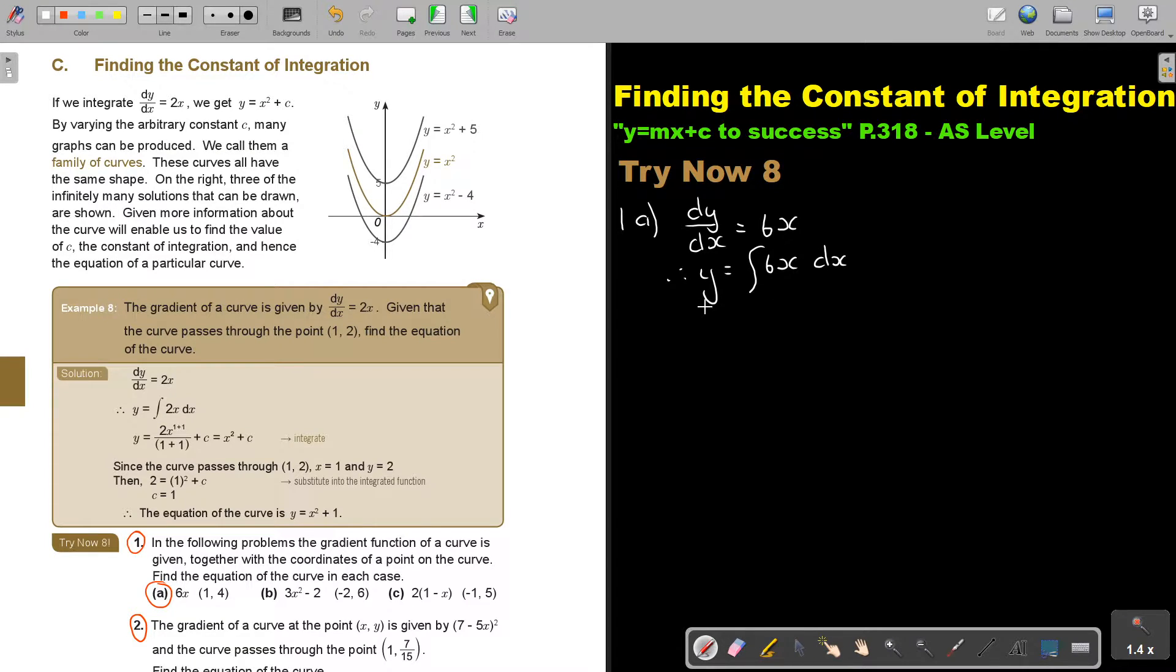And that will give me y equals 6x, it's 1 plus 1, it's 2 over 2 plus c, which will give me 3x squared plus c. And now, I know that the point is going to be 1 and 4.